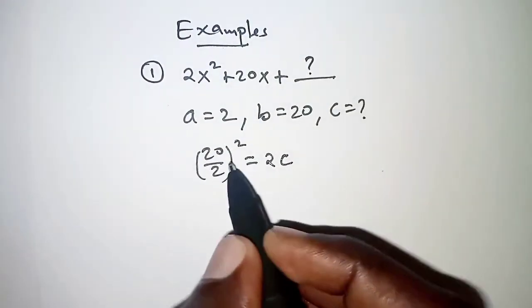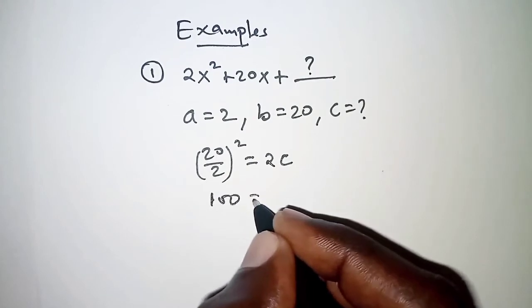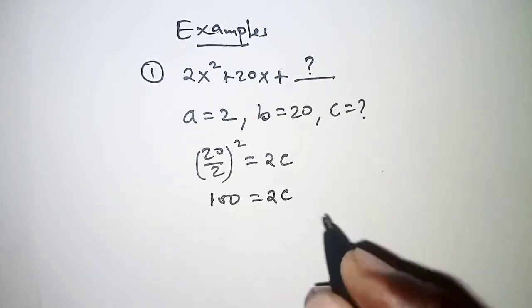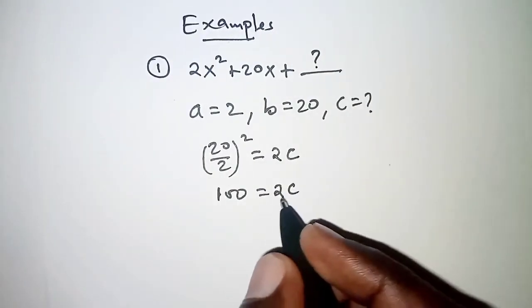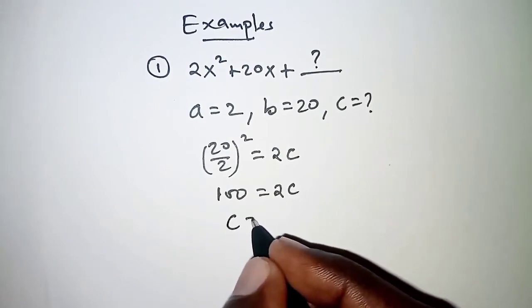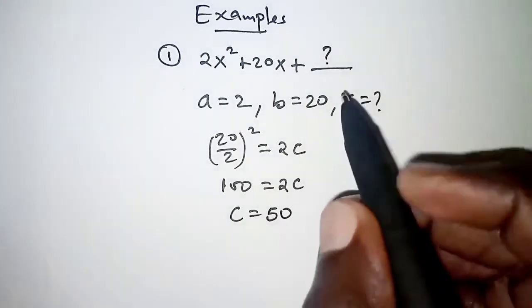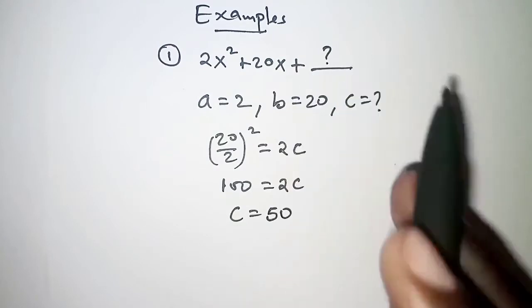The left hand side becomes 10², which is 100, and the right hand side is 2c. So dividing both sides by 2, we have c as 50. And in place of this space,